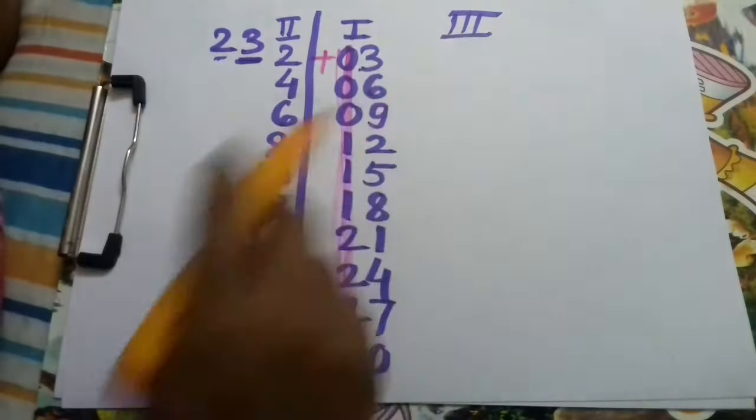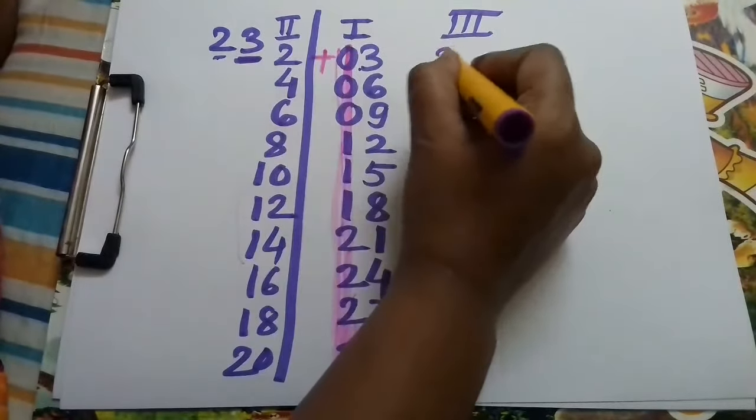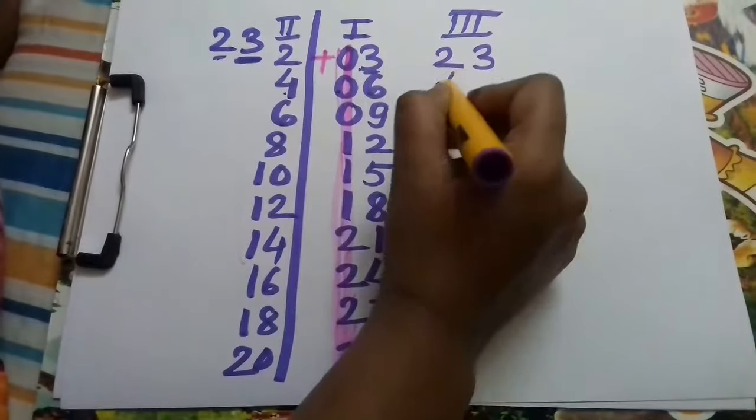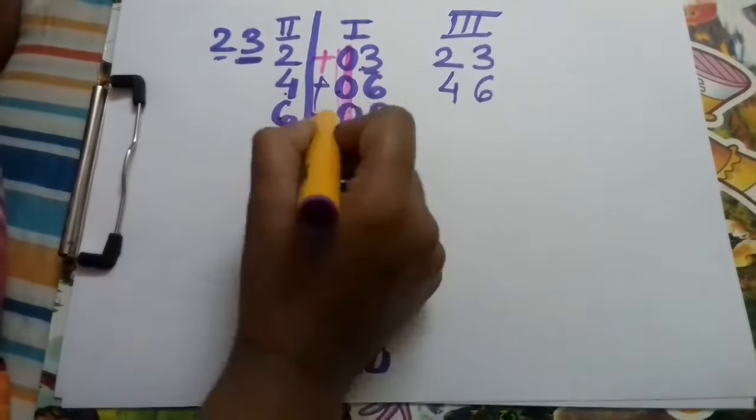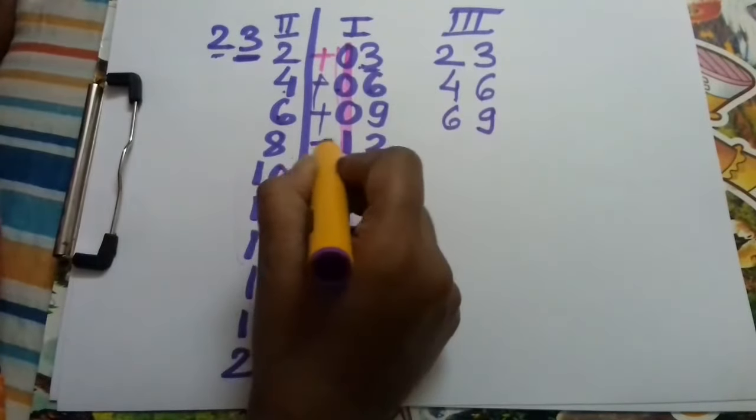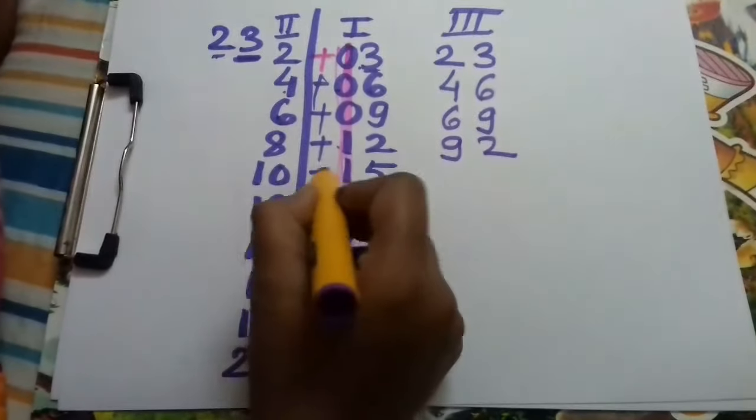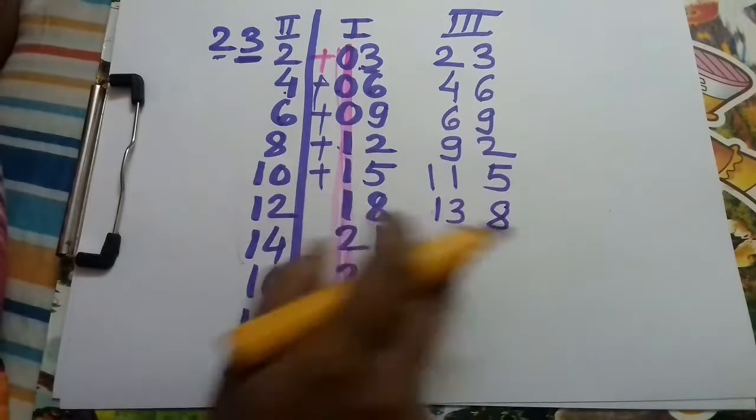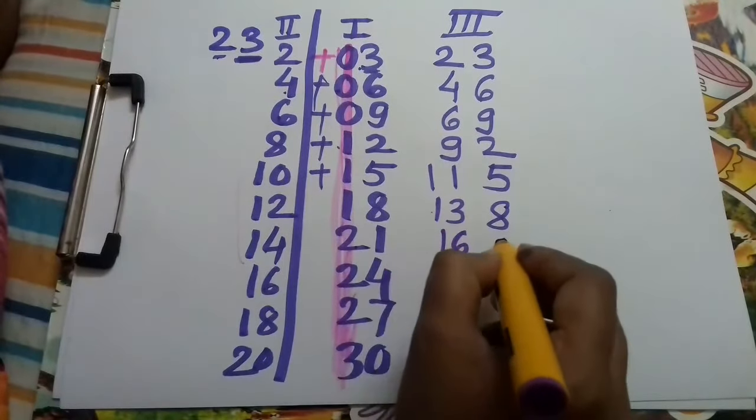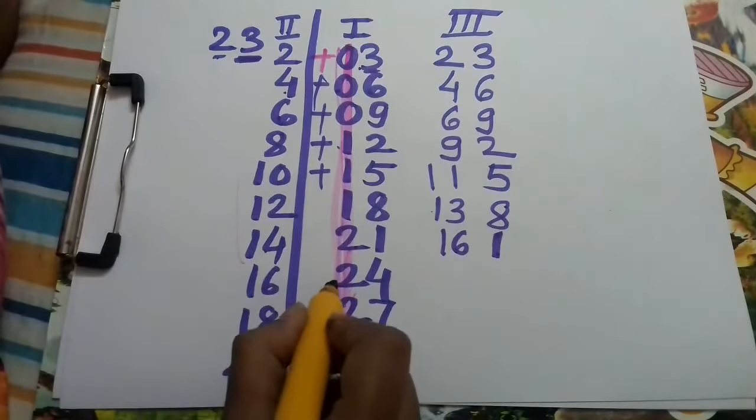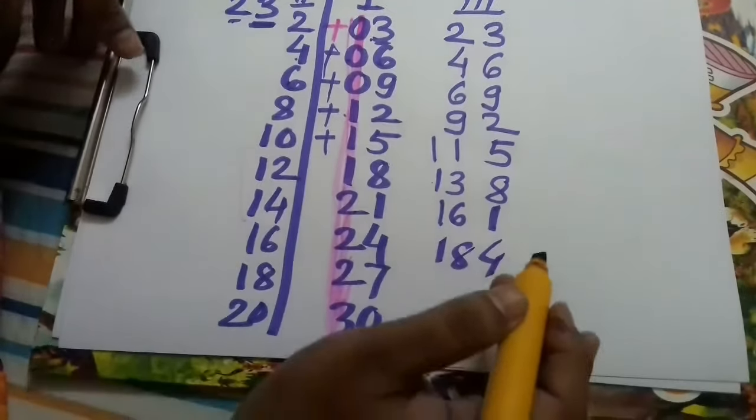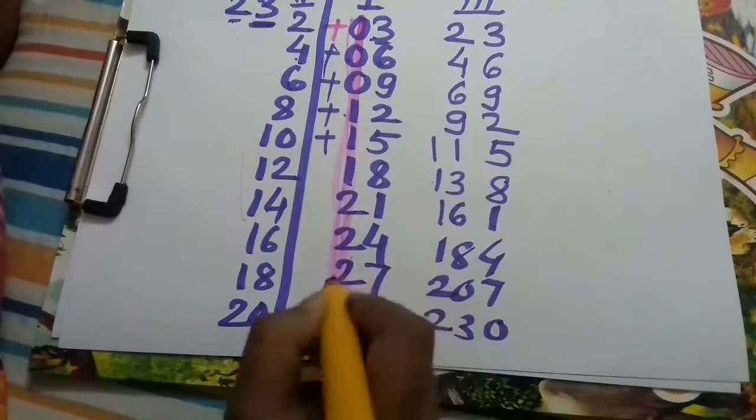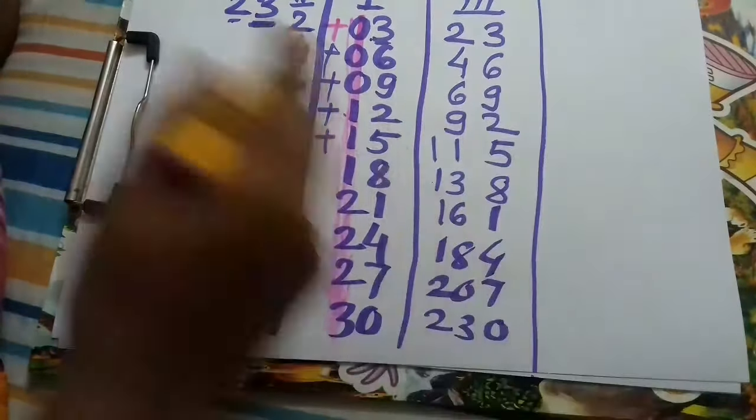2 plus 0 is 2, 3. 4 plus 0 is 4. 6 as it is. 6 plus 1 is 7. 9 as it is. 10 plus 1 is 11. 12 plus 1 is 13. 15 as it is. 14 plus 2 is 16. 16 as it is. 16 plus 2 is 18. 18 plus 2 is 20. 20 plus 3 is 23.